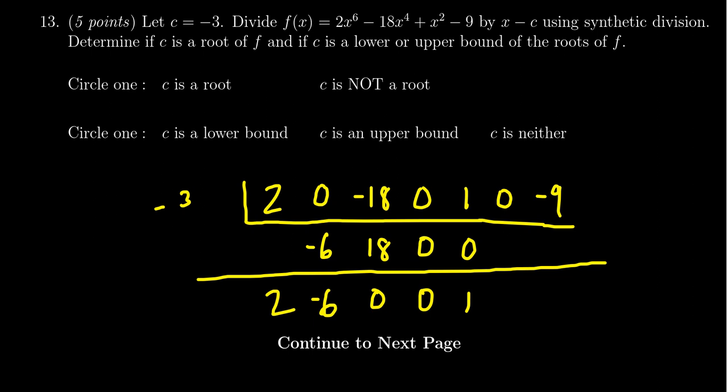Plus 1, we're going to get a 1 this time. 1 times -3 is -3, plus 0 is -3. -3 times -3 is a positive 9, and then -9 plus 9 is 0.